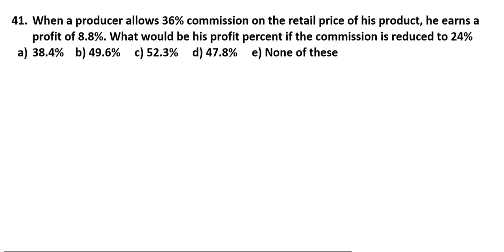When a producer allows 36% commission on the retailer price of his product, he earns a profit of 8.8%. What would be his profit if the commission is reduced to 24%? The old commission is 36% and the new commission is reduced by 12%, so the new commission is 24%.